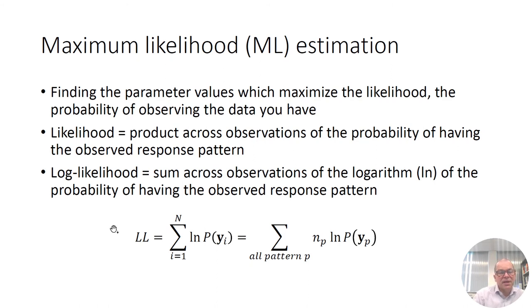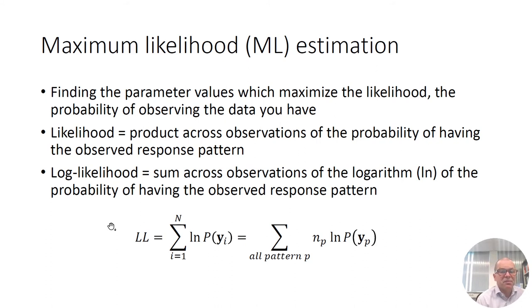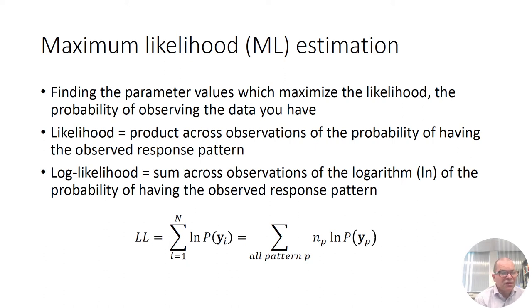The last topic I would like to address in this video is estimation. Estimation of a latent class model is done with the principle of maximum likelihood — also known as ML estimation. How does this principle work? You try to find the parameter values which maximize the likelihood. The likelihood is the probability of observing the data you have.